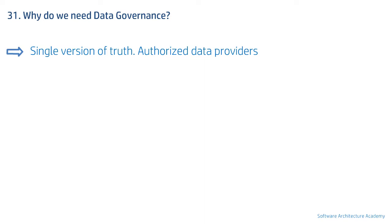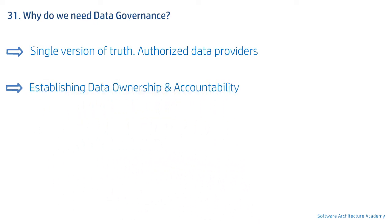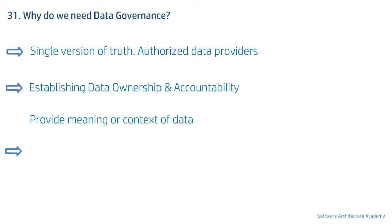Hence there was a need to mark certain systems as authorized to provide particular business data when multiple systems held the same information. The second challenge: although there were clearly defined application or system owners, there were no defined data owners. So if there was a data issue, no one knew who should fix it or take responsibility, often leading to chaos and monetary losses.